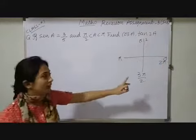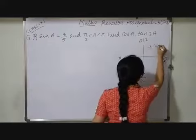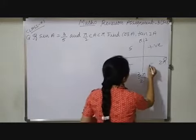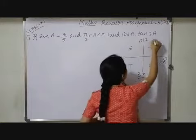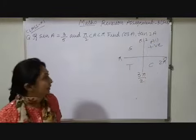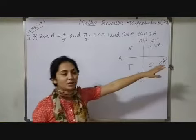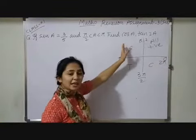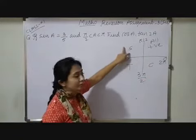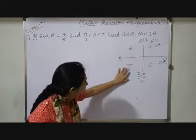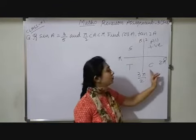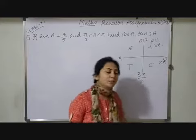In the first quadrant, all are positive. In the second quadrant, sin and cosec are positive. So like that you have to remember: in the first quadrant, all ratios are positive. In the second quadrant, sin and its reciprocal cosec will be positive. In the third quadrant, tan and its reciprocal cot will be positive. And in the fourth quadrant, cos and sec will be positive.